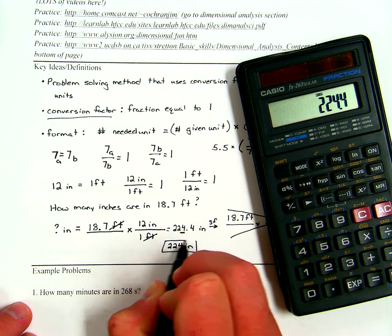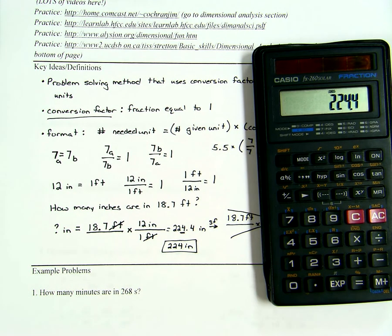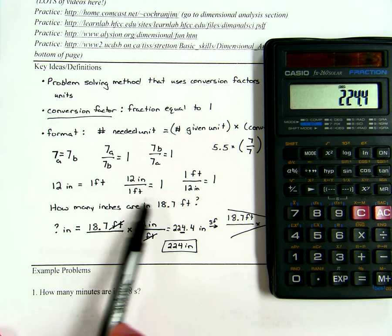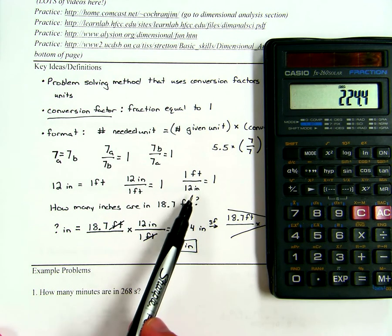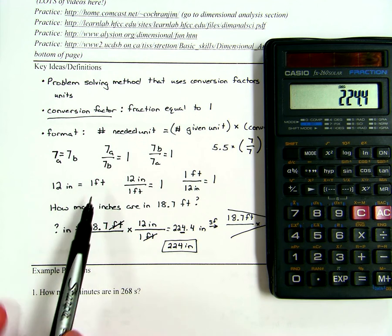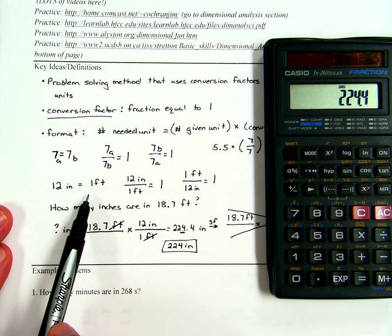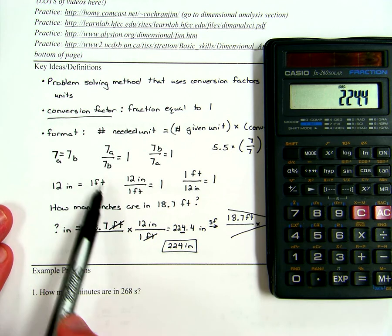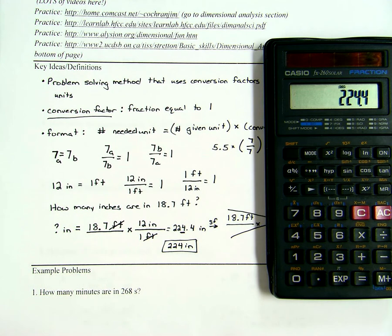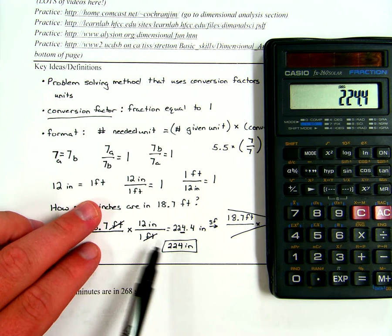The moral of the story: conversion factors are any fraction equal to 1, and we get those from equalities. If you have any equality — quantity A equals quantity B — and you divide one by the other, it will always equal 1. We can use either of those fractions as a conversion factor to get the units we're looking for.